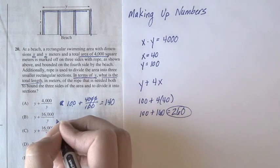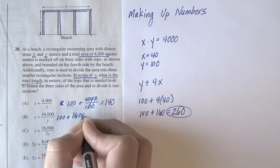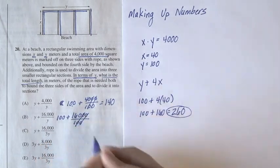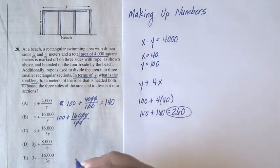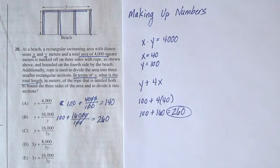Moving on to B, 100 plus 16,000 over 100, so that simplifies to 160, 100 plus 160 equals 260. That's the answer we want, but just to be careful, we can keep going.